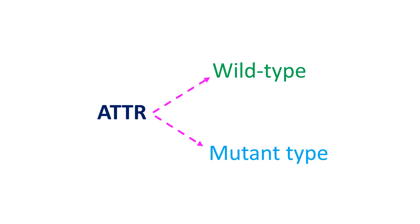Two types of ATTR amyloidosis are wild type and mutant type. While the wild type of ATTR amyloidosis takes a long period for amyloid deposits to develop, the mutant type has a rapid rate of deposition.